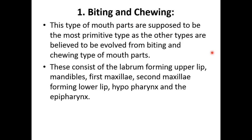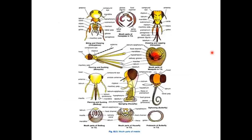Among them, the first one is the biting and chewing type. This type of mouthparts is supposed to be the most primitive type. All other mouthparts are believed to have evolved from the biting and chewing type. Biting and chewing type mouthparts consist of the labrum forming the upper lip, a pair of mandibles, a pair of maxillae, second maxillae forming the lower lip, hypopharynx, and the epithelium.